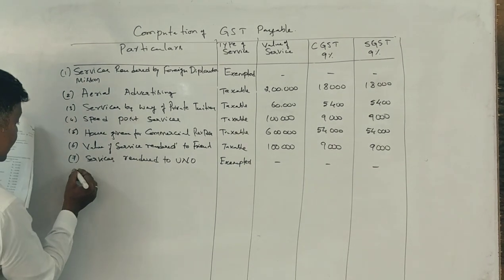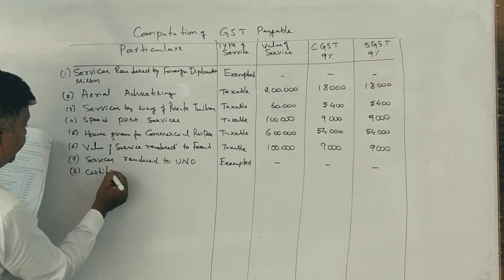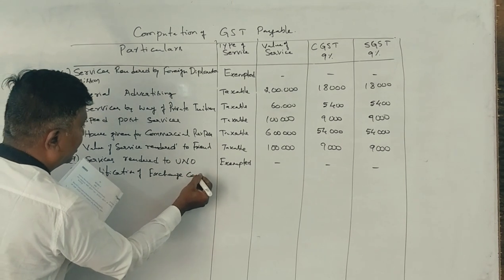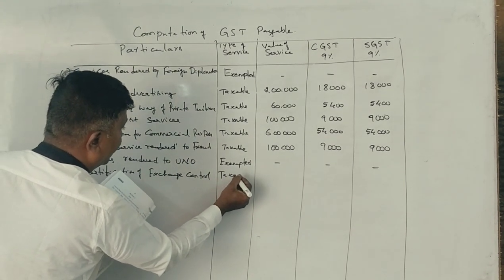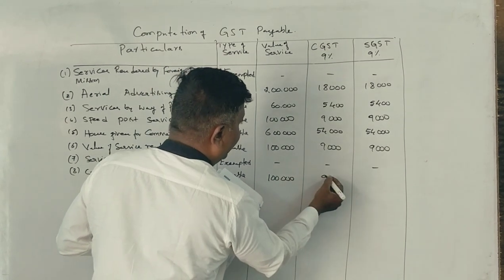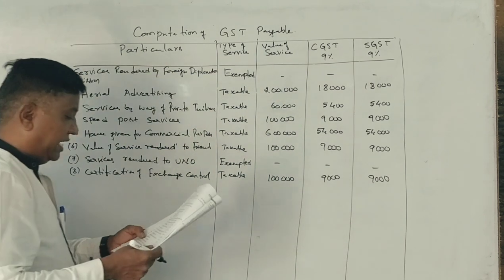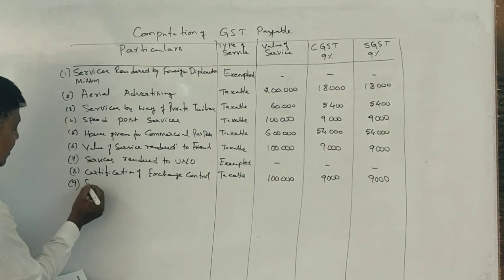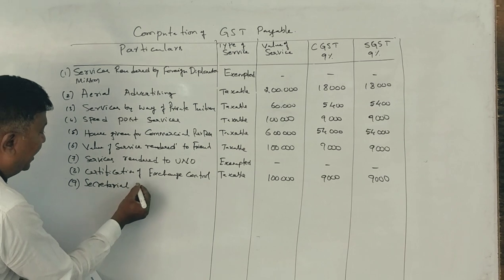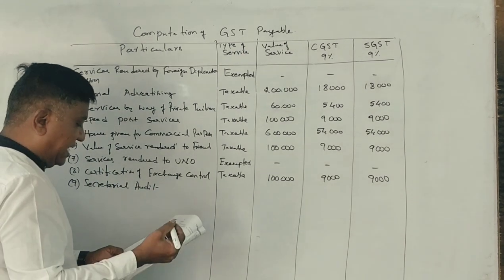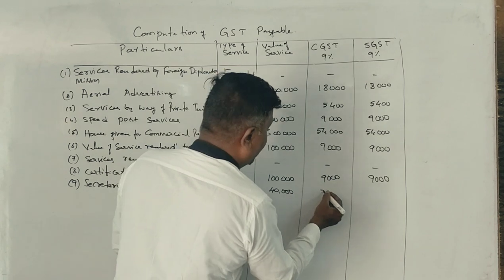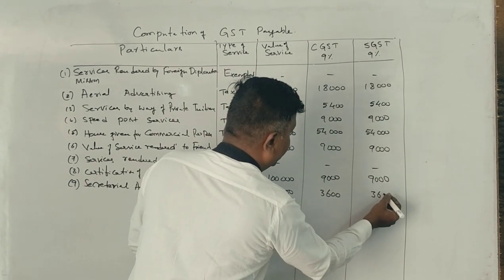Next point: certification of exchange control. Exchange control is also a taxable service. Therefore, on 1 lakh rupees, 9% is 9,000 CGST and 9,000 SGST. Next, secretarial audit is a fully taxable service. 40,000 is the value of service, 9% of which is 3,600 CGST and 3,600 SGST.